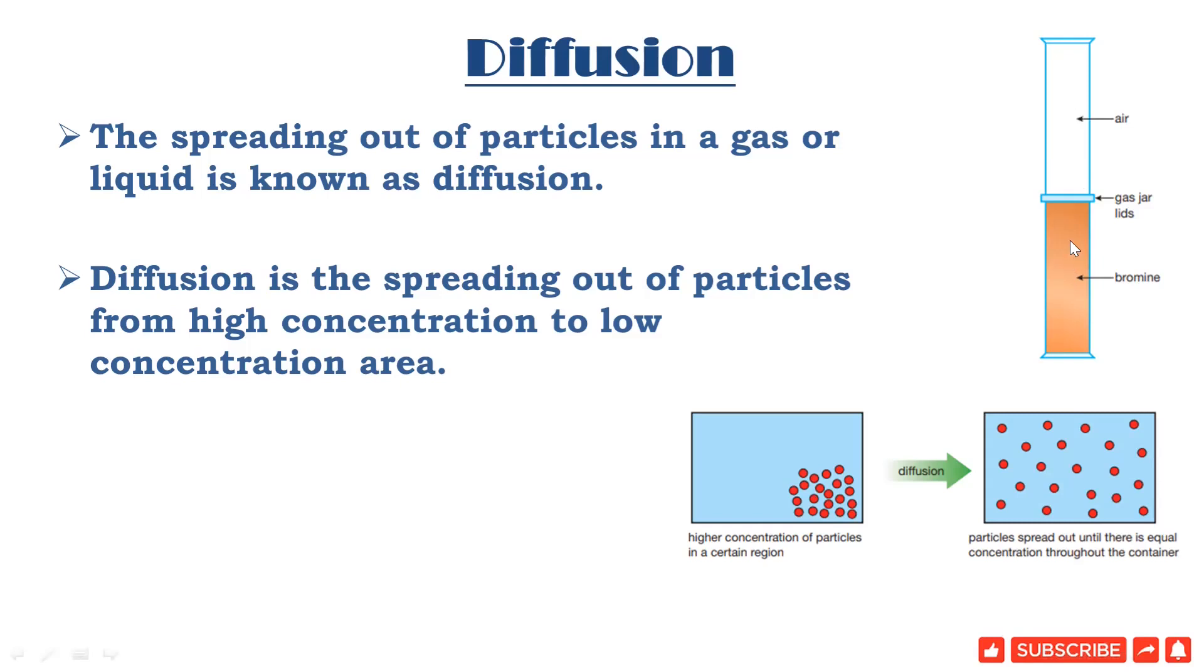The bromine gas gets diffused into the air and air diffuses into the bromine part. The bromine is moving from higher concentration to lower concentration. It will take time until the bromine and air get homogenized and the particles of bromine spread out until there is equal concentration in both containers.